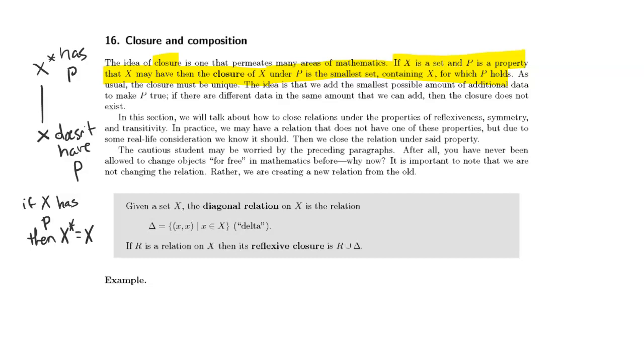So the whole idea is that we're basically going to create a superset of X that has whatever property is that we want to have. X star has to be unique, that's the only other thing. The idea is that we add the smallest amount of additional data to make the statement P true.